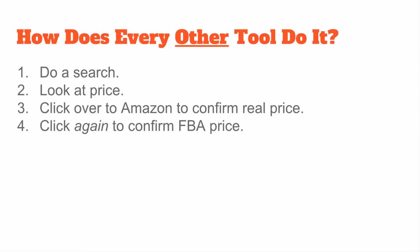Zen Arbitrage shows you the FBA price directly in our search results, which no other tool does either. And only then, after going through all of those cumbersome steps, can you make a purchase. You have to click over at least two different times to confirm what your profits are going to be. And then you also have to click over to look at Keepa charts — which is a separate thing — but we embed Keepa charts directly into Zen Arbitrage. Every other tool makes you do all of this clicking simply to get to the number you want, which is your profit.